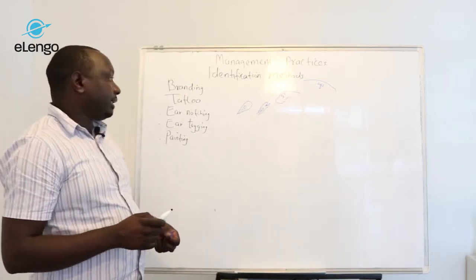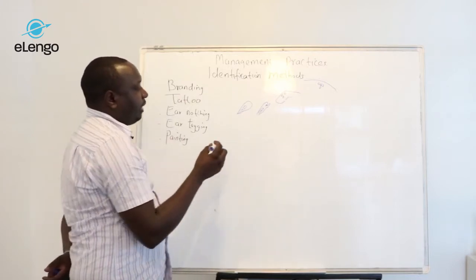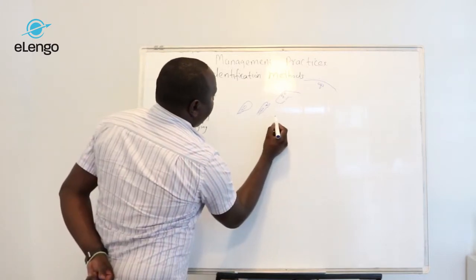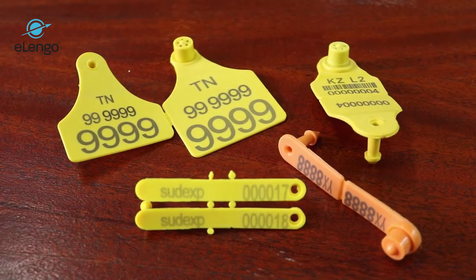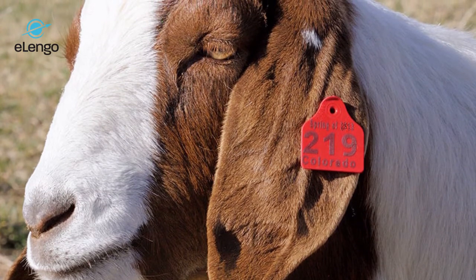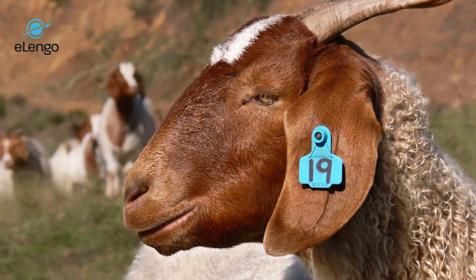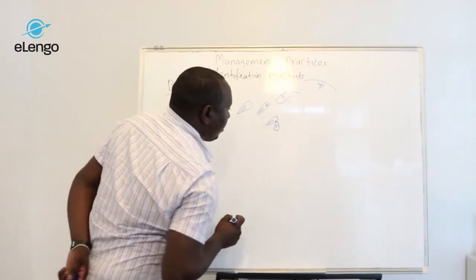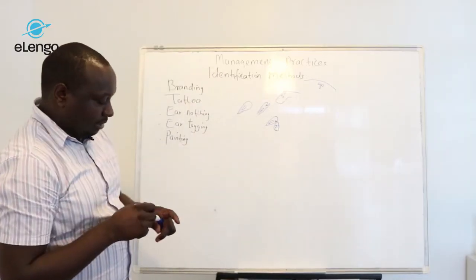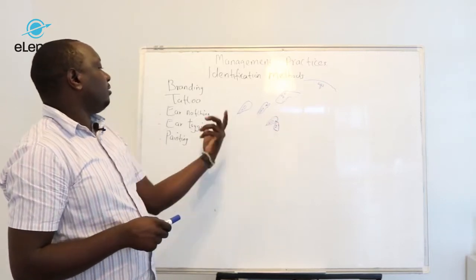The other method is ear tagging. This is the most common identification method, whereby a number is tagged on the ear of a given animal. For example, we have a tag here. This could be animal letter J or any other name - can be Zembu, can be Jazzy, can be any name to identify that animal.